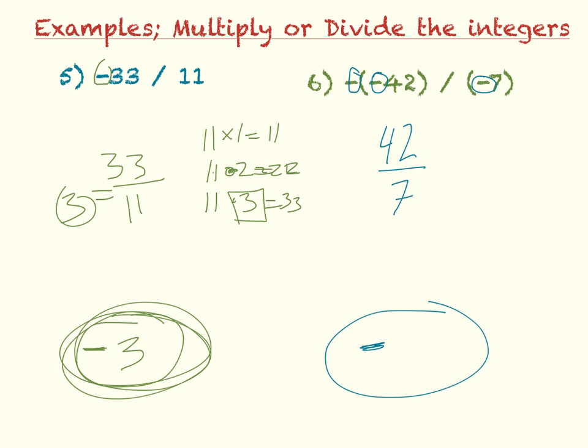And again, if I look at my 7s, 7 times 1 is 7, 7 times 2 is 14, 7 times 3 is 21, and continue on, and you get to 7 times 6, which is 42. So that means 42 divided by 7 is 6. So my final answer, negative 6.